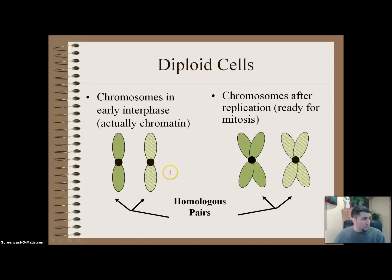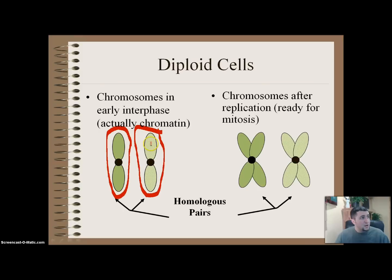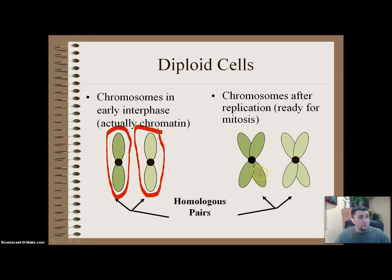Let's look at an example of what it means to be diploid. Let's say this chromosome came from your mom and this one came from your dad. They're a little different but do the same thing — let's say the one from your mom says to do homework and the one from your dad says not to do homework. It's the same trait but you get one from your mom and one from your dad. Even if we copy that, it's still diploid because we just copied the same genetic information — we didn't add anything new.